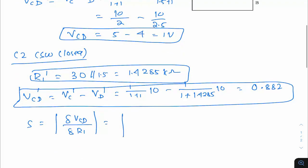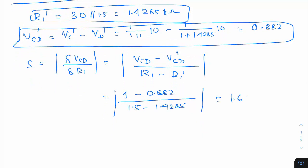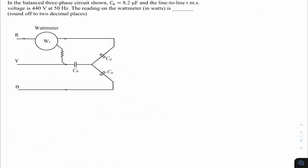Sensitivity = |ΔVcd / ΔR1| = |Vcd − Vcd_dash| / |R1 − R1_dash| = |1 − 0.882| / |1.5 − 1.4285|. Simplifying gives 1.65 V/kΩ. The answer is 1.65. Once switch-open and switch-closed resistances and voltages are found, taking their ratio is straightforward.